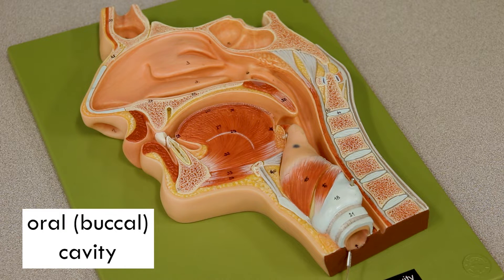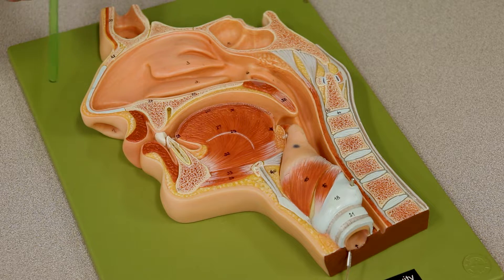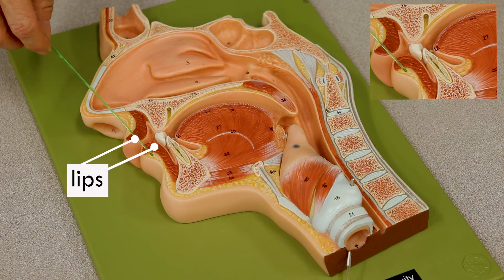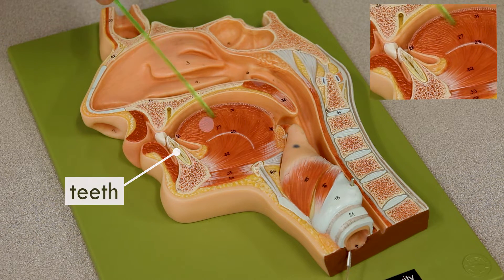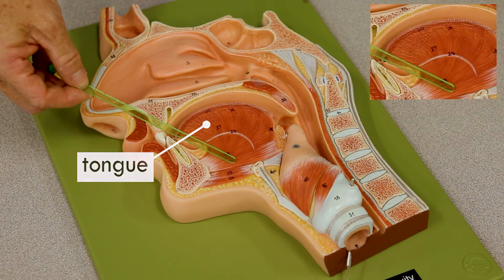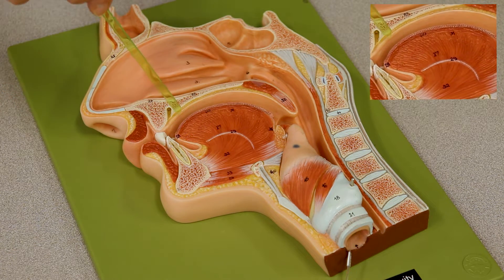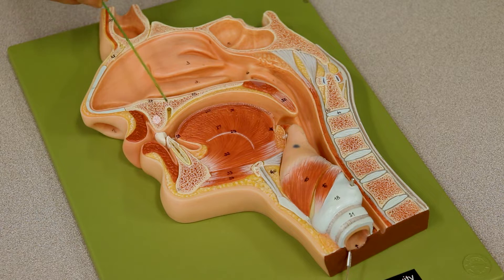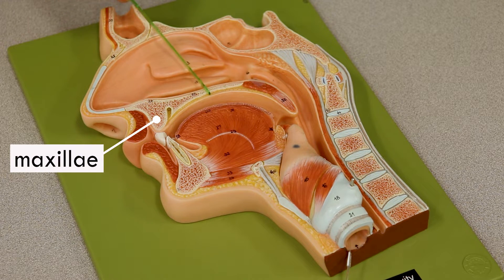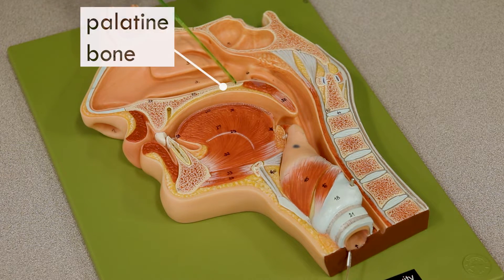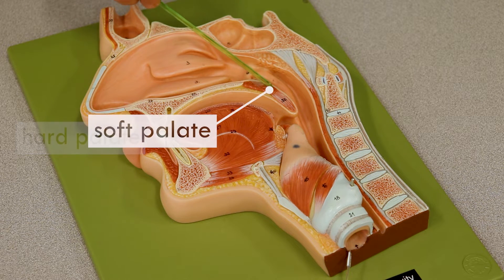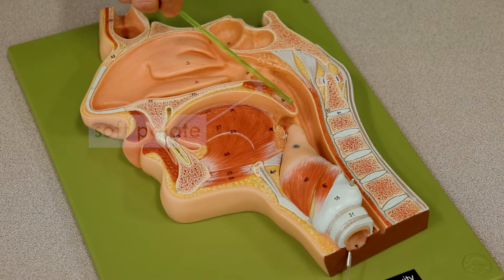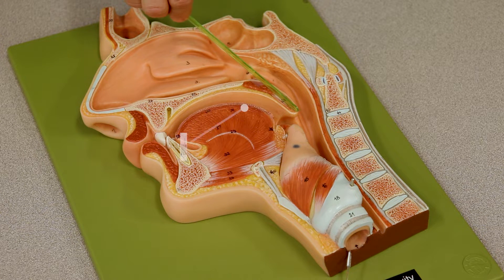We're going to start with the oral cavity, which we've already talked about a little bit because it is shared with the respiratory system. On this model, these are the lips, the teeth, the tongue, the muscles that move the tongue, and the oral cavity. The roof of the oral cavity is formed by the maxilla fused with the palatine bone, called the hard palate. Posterior to that is soft tissue called the soft palate, and the very end of the soft palate is called the uvula.